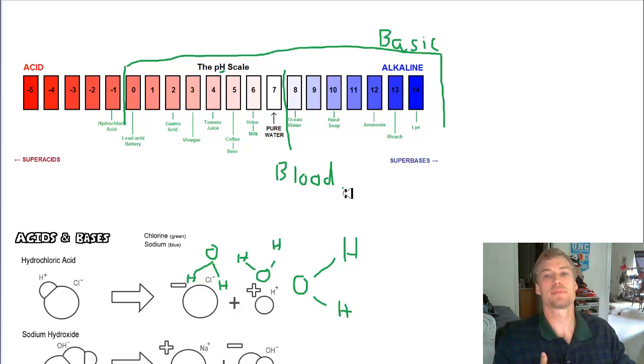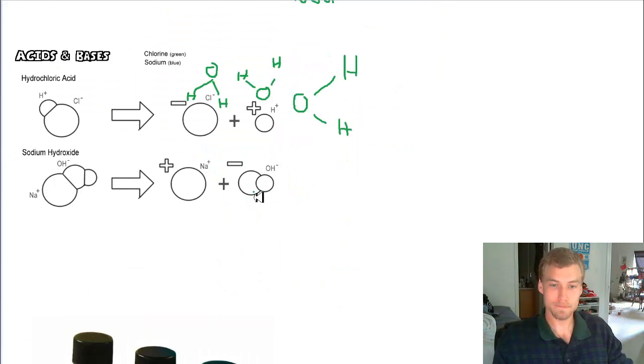Your stomach acid is kept at a pH of around 2. So that would be right here, the gastric acid. That's kept at a pH of around 2 because the enzymes that are in your stomach that break down food require that low of pH. But you don't want your blood to have that low of pH because then the enzymes and proteins in your blood, they won't function properly.